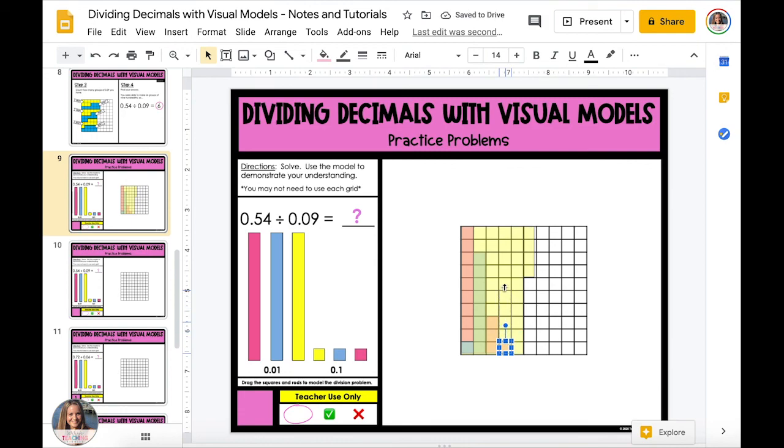We're going to continue to shade in groups of nine hundredths until we have split up the entire yellow area of the 54 hundredths into individual groups. Finally, we're going to count up how many groups we were able to create of nine hundredths. Because we were able to create six groups of nine hundredths, our final answer for 0.54 divided by 0.09 equals six.